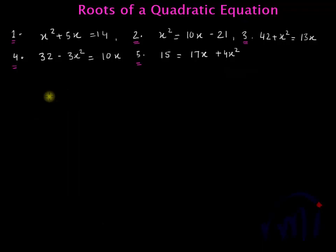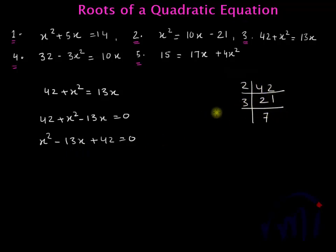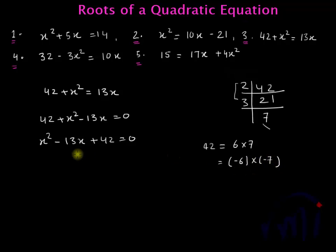The third problem is 42 plus x squared equals 13x. This can be written as 42 plus x squared minus 13x equals 0. Rearranging in decreasing powers of x: x squared minus 13x plus 42 equals 0. Now factorizing 42: 3 sevens are 21, and 6 times 7 gives 42, with 6 plus 7 equaling 13. So 42 can be written as 6 multiplied by 7, or as minus 6 multiplied by minus 7, where minus 6 plus minus 7 gives minus 13.